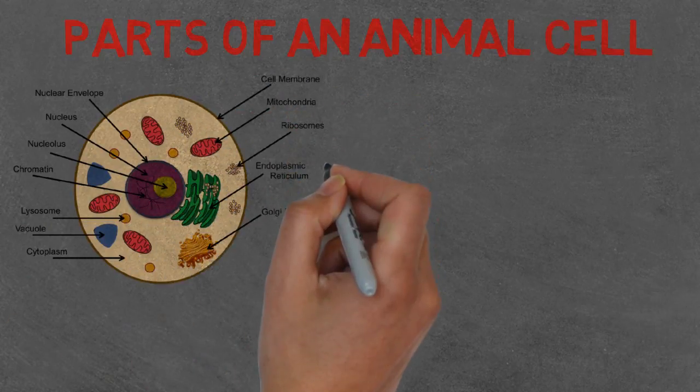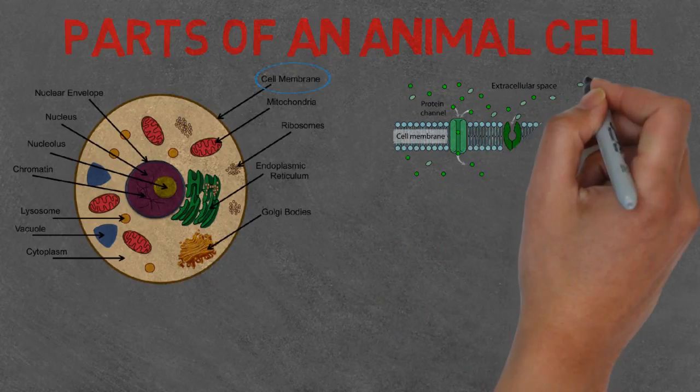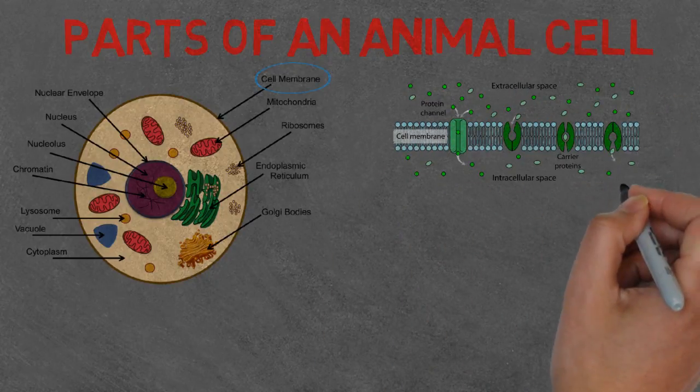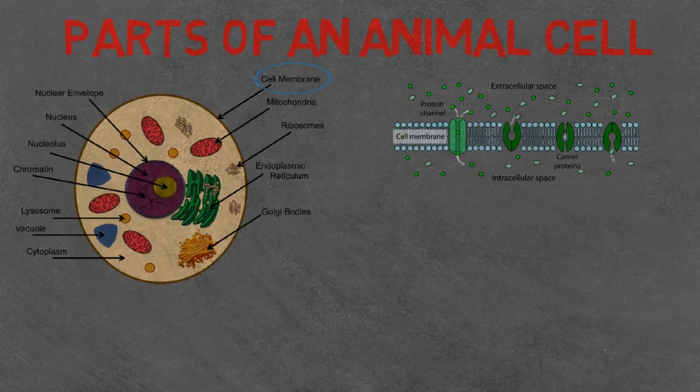We're going to look at what's in an animal cell and their function. First we've got the cell membrane. It is made up of phospholipid bilayer which has embedded proteins. Its main function is to control what gets in and out of the cell by receiving signals.